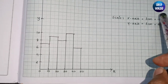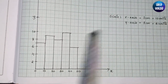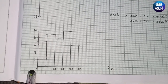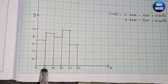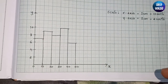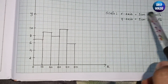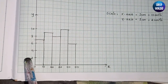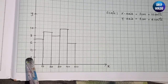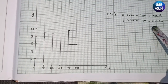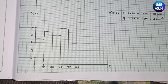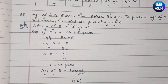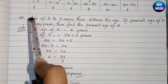For the scale: on the x-axis, 1 centimeter = 10 units, since each class interval has a width of 10 (e.g., 10−0 = 10, 20−10 = 10). On the y-axis, 1 centimeter = 2 units, as we have taken a scale of 2. This is the last question of this model paper.